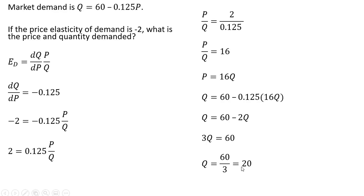And to get the price, we can just simply take this 20 and plug it into this equation up here for price. And doing that, we get a price of $320. So when the price elasticity of demand is minus 2, the quantity demanded is 20, and the price per unit is $320.